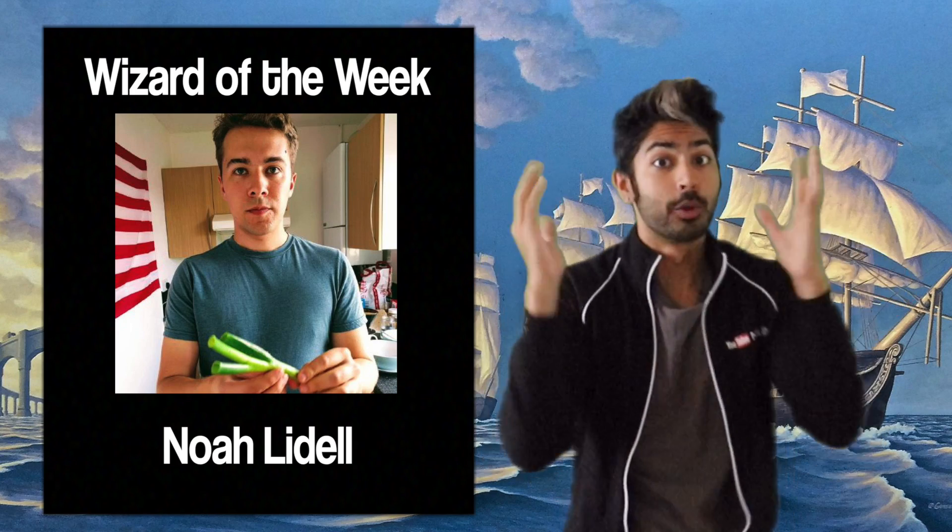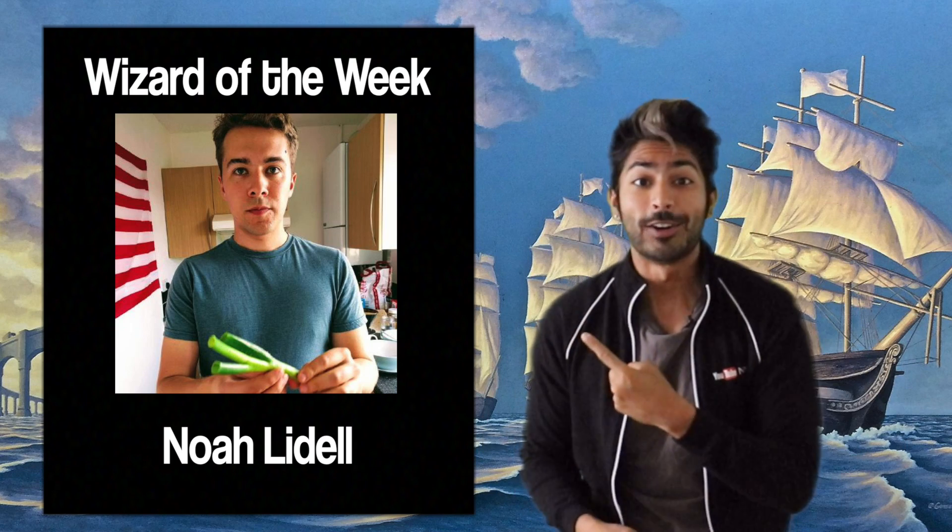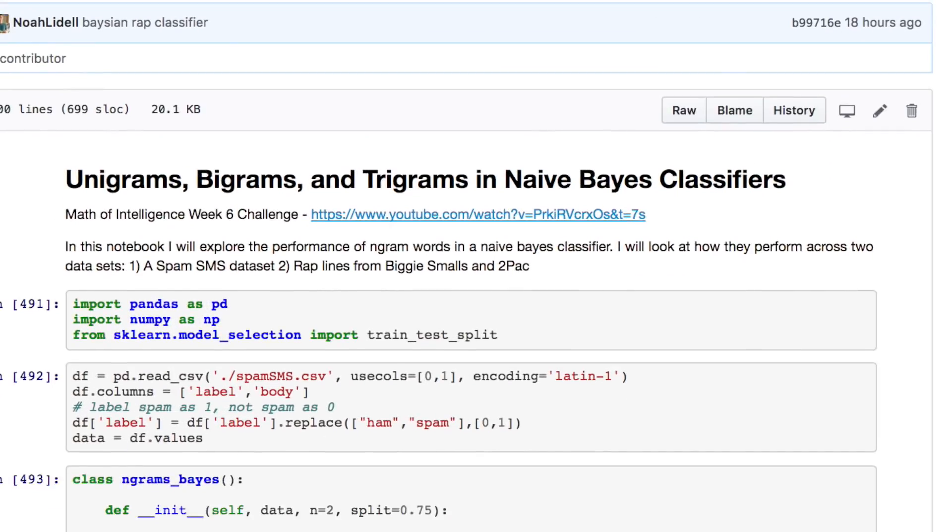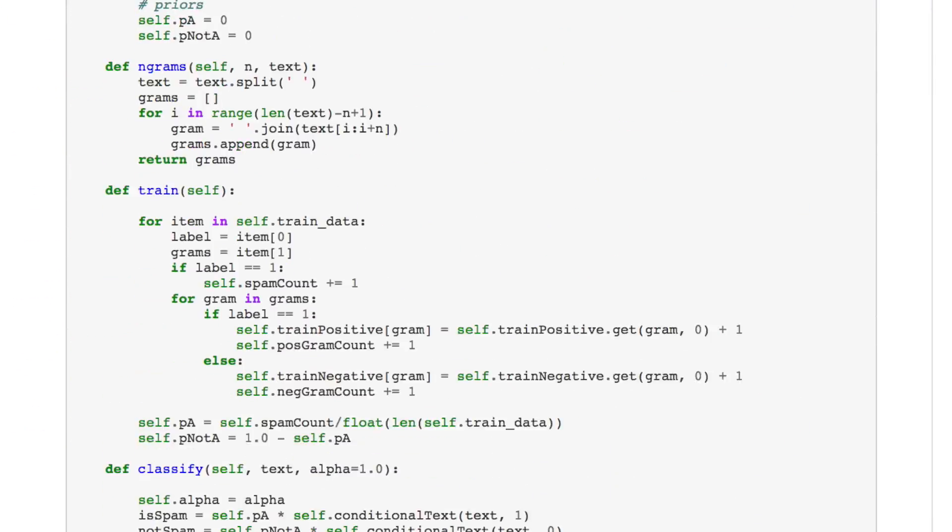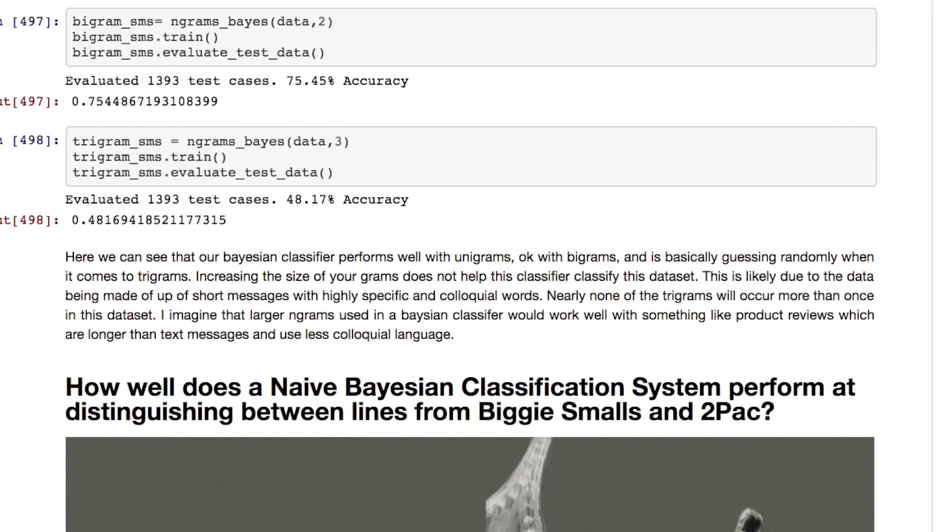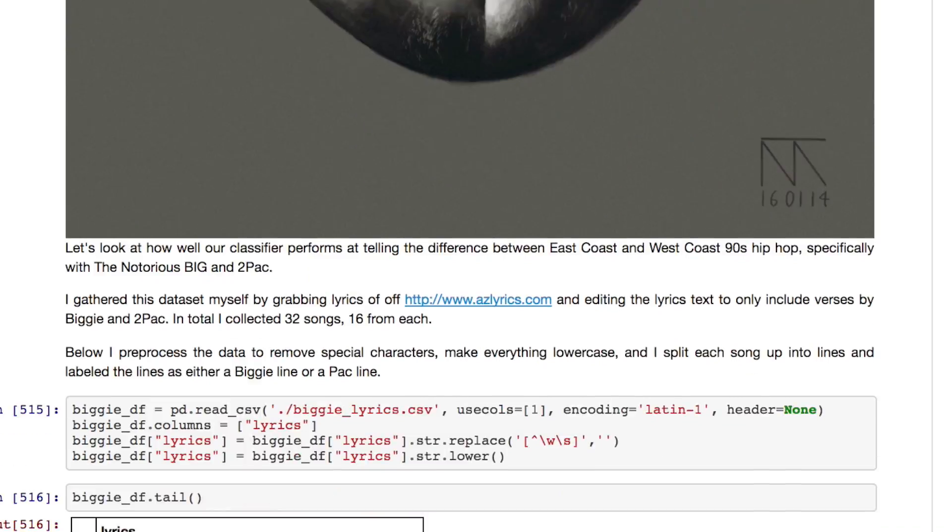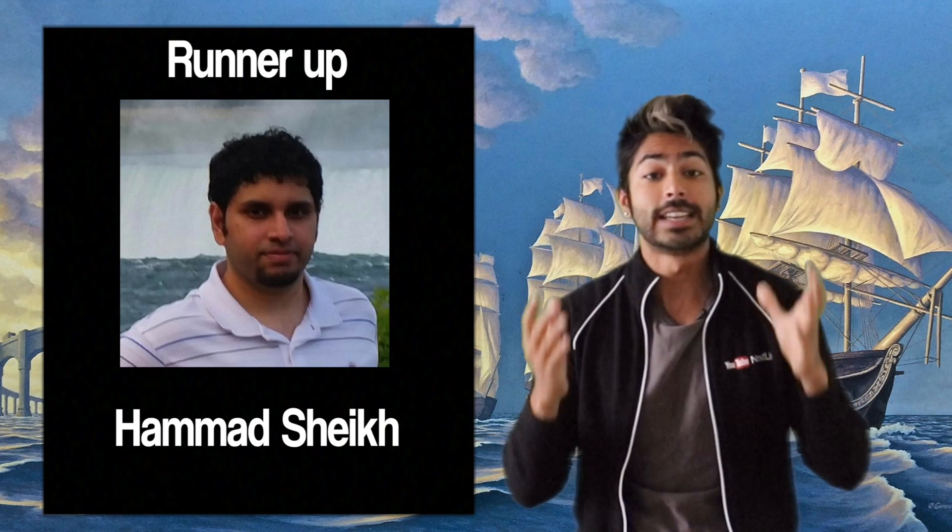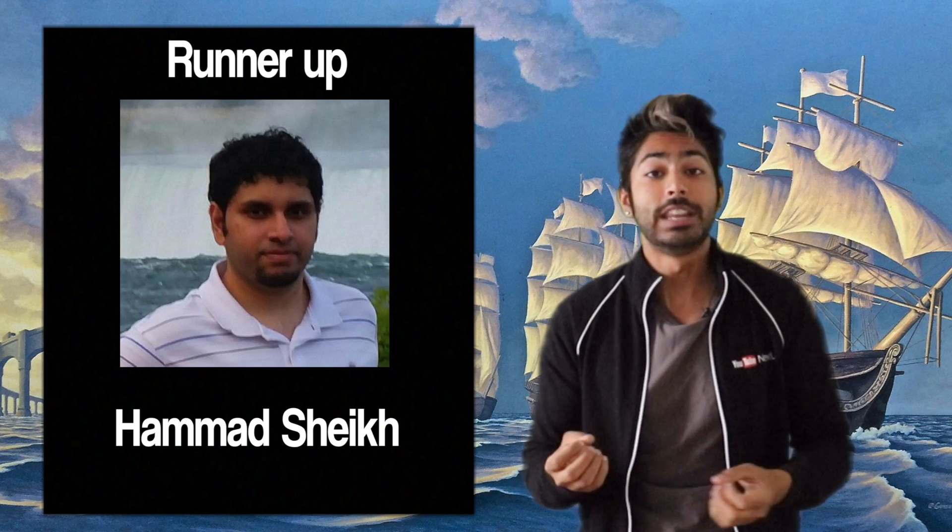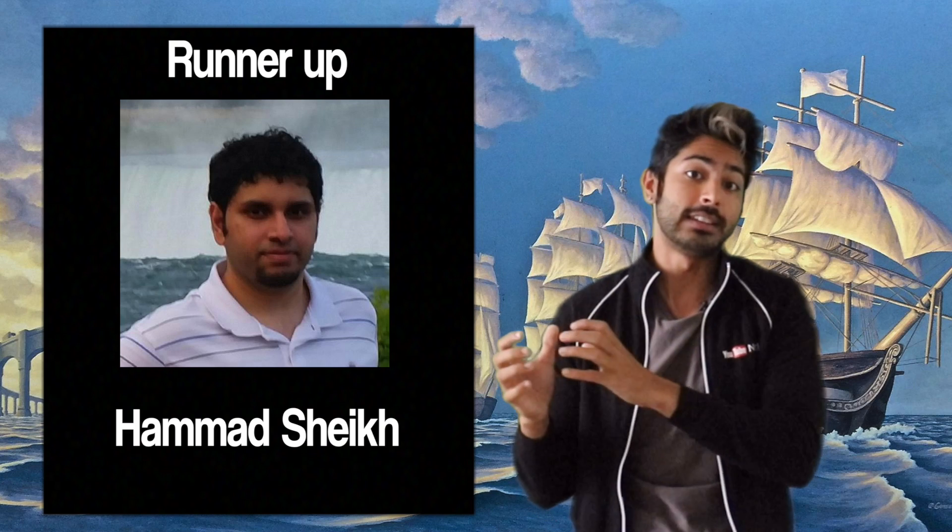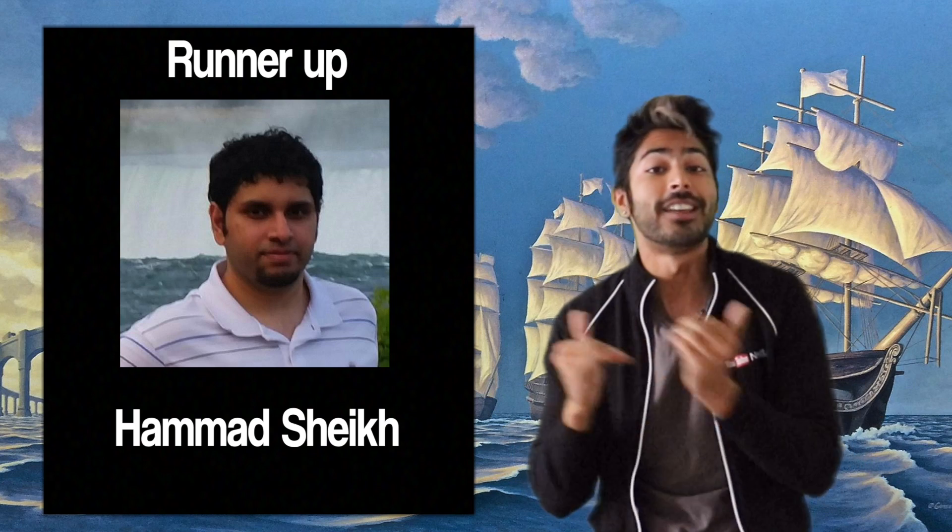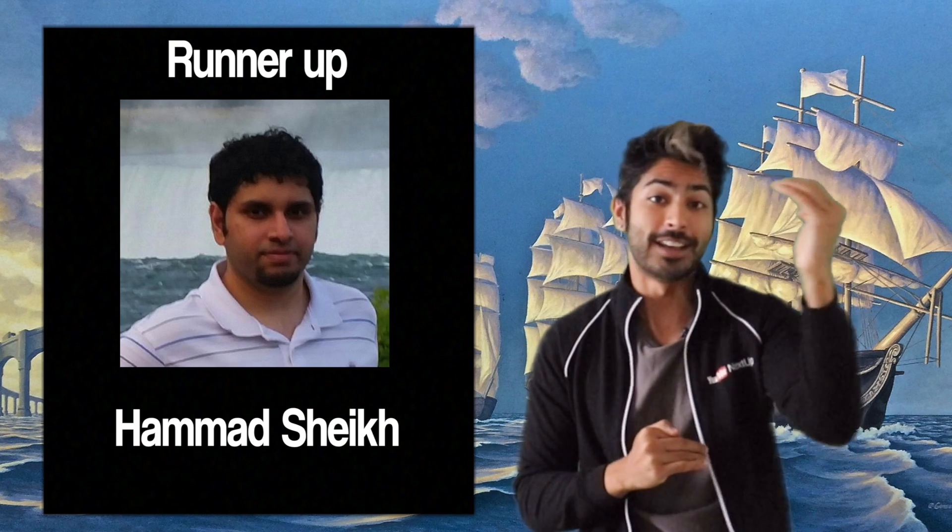And now to announce the real heroes. The wizard of the week is Noah Liddell. Noah built a naive Bayes classifier to distinguish rap lyrics from Biggie and Tupac. He used unigrams, bigrams, and trigrams to count words and achieve the best results with unigrams. Great work Noah. And the runner-up is Hamad Shaikh. His naive Bayes classifier detected spam in YouTube comments, and he used the popular TF-IDF technique to determine how important a word was instead of bag of words. Next level.